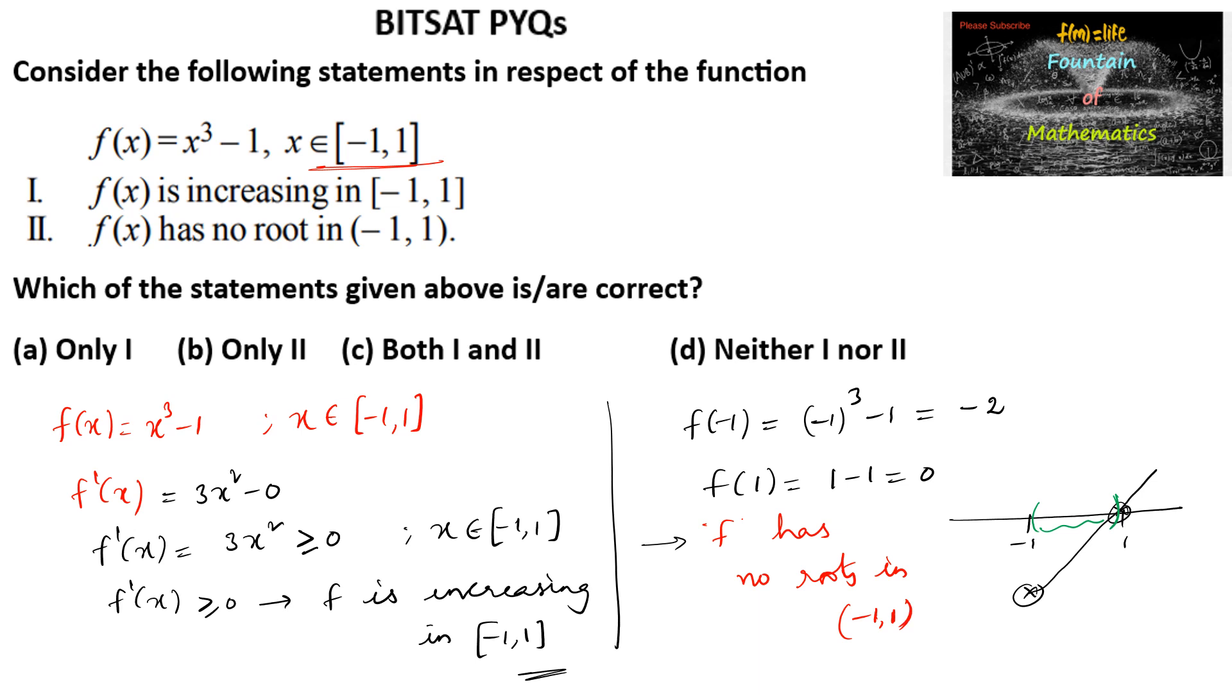We can go with option f of x has no root, which is correct, and this function f is increasing is also correct. So both options are correct, we can go with option c, both 1 and 2.